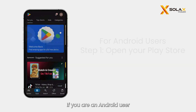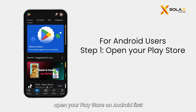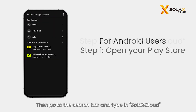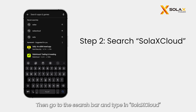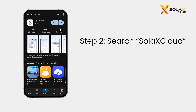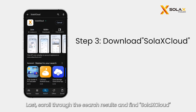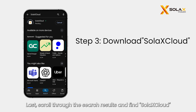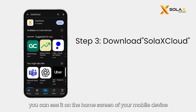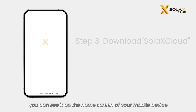If you are an Android user, open your Play Store on Android first. Then go to the search bar and type in Solax Cloud. Scroll through the search results and find Solax Cloud, then click the Install button. Once the download is complete, you can see it on the home screen of your mobile device.